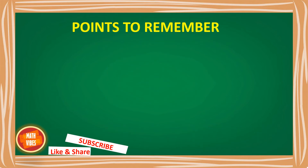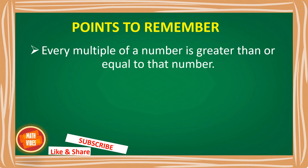So here are some points we have to remember — basic rules related to multiples which are always applicable. First: every multiple of a number is greater than or equal to that number. This means whatever multiple comes for any number, it will be bigger than or equal to that number. Remember that factors were always less than or equal to the number, but multiples will always be greater than or equal.